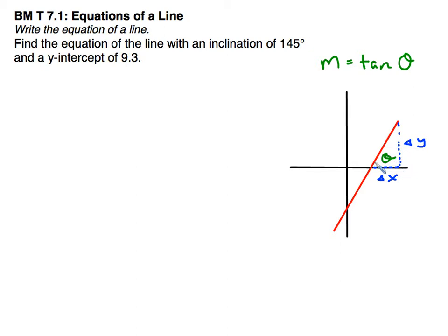And that's because when I draw in a slope triangle, the change in y and the change in x, which is the slope, is also the opposite and adjacent sides for the triangle. So I can take the tangent of the angle to get the slope, or if I have the slope, inverse tangent, to find the angle.